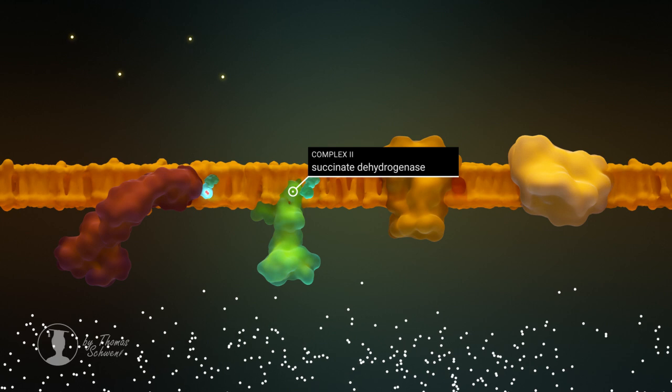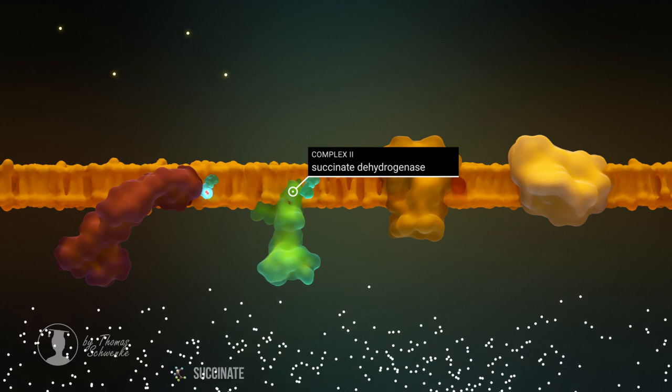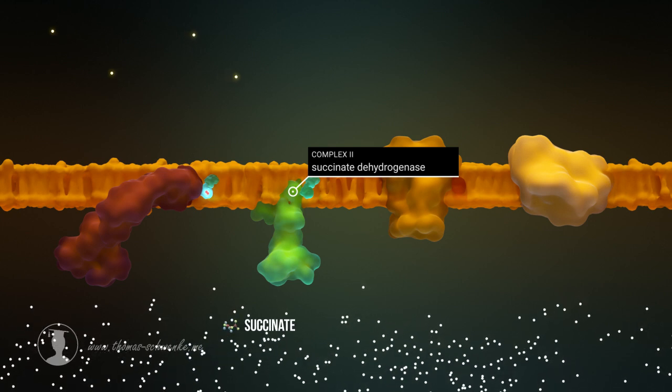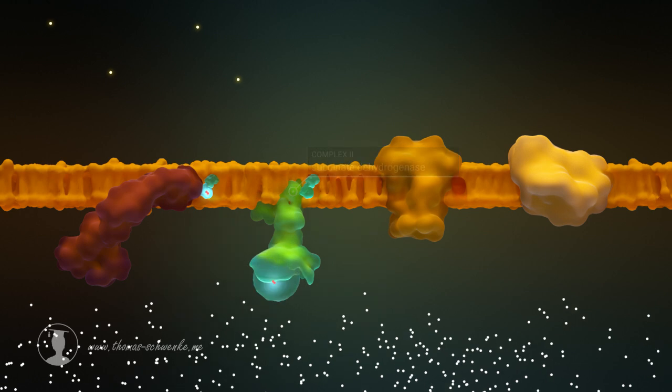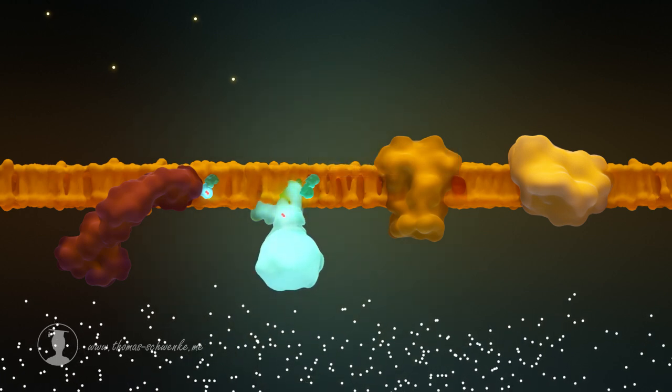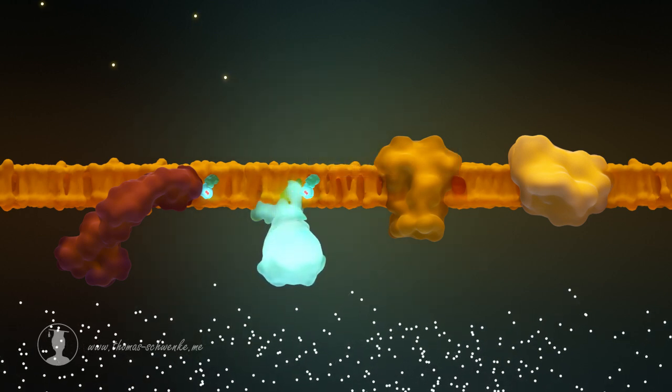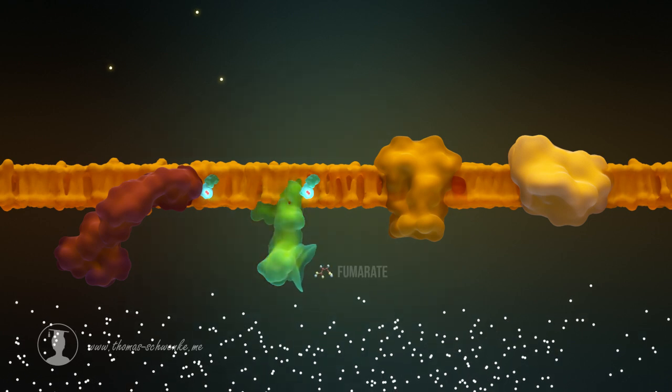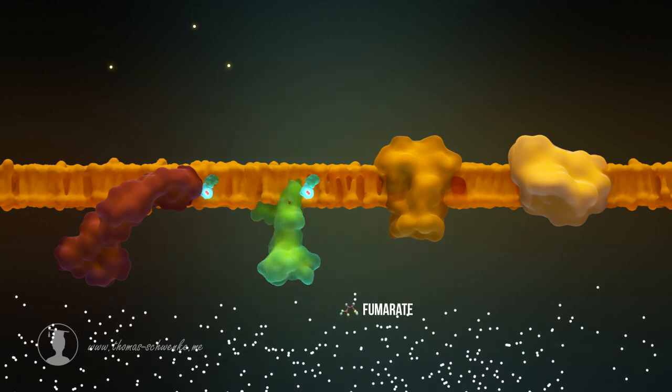In Complex 2, succinate is oxidized to fumarate, which reduces coenzyme Q10. That is, two electrons are transferred to Q10. However, the energy is not sufficient to pump protons from one side to the other.